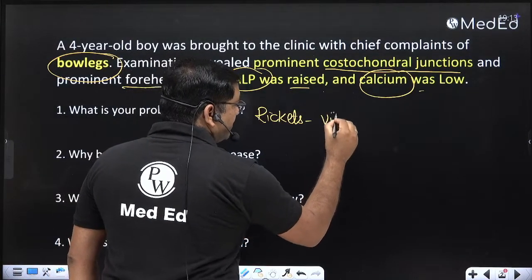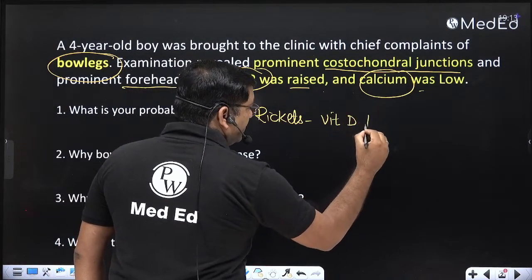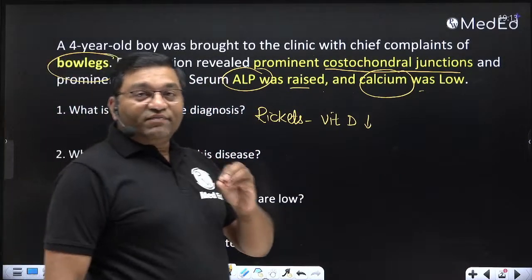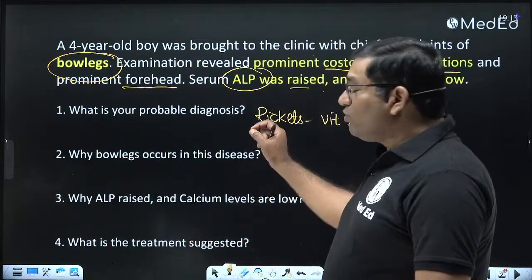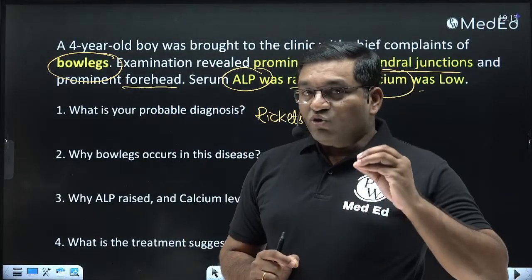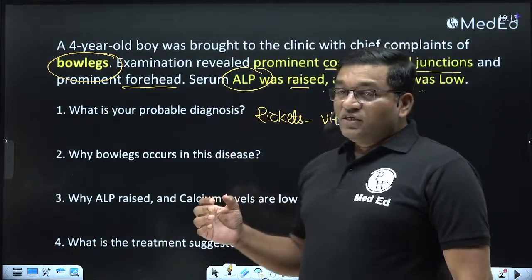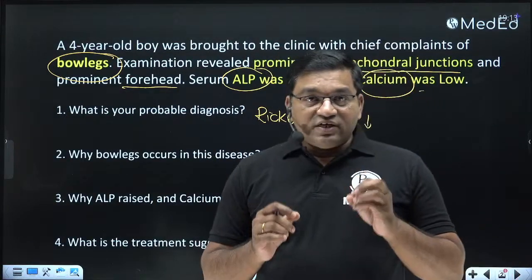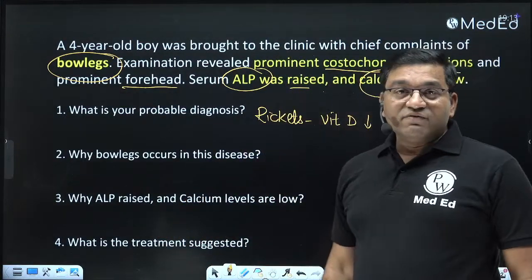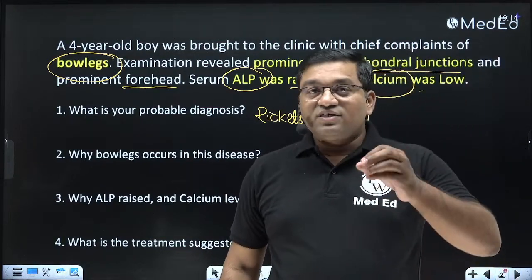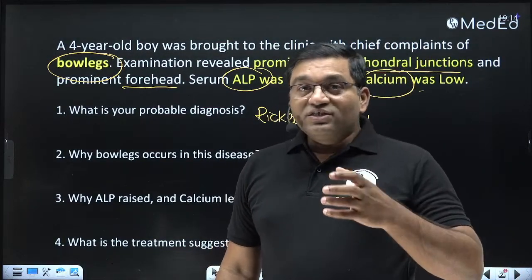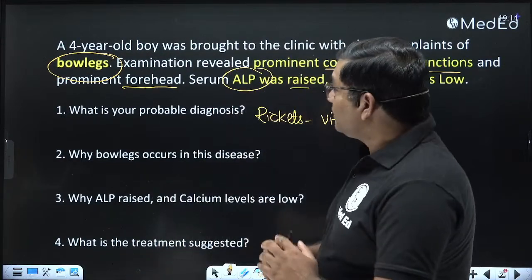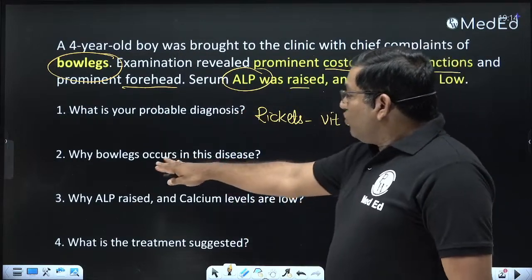The diagnosis is rickets due to deficiency of vitamin D — vitamin D deficiency rickets. In adults, the same disease is known as osteomalacia. Features of osteomalacia include: history of frequent bone fractures, proximal muscle weakness, raised alkaline phosphatase level, and decreased serum calcium level. There is decreased bone mineral density leading to osteoporosis and frequent fractures.